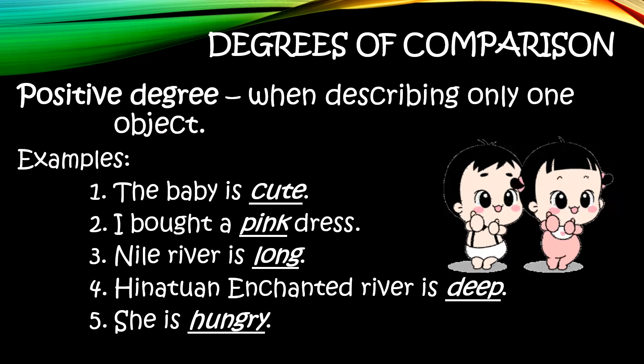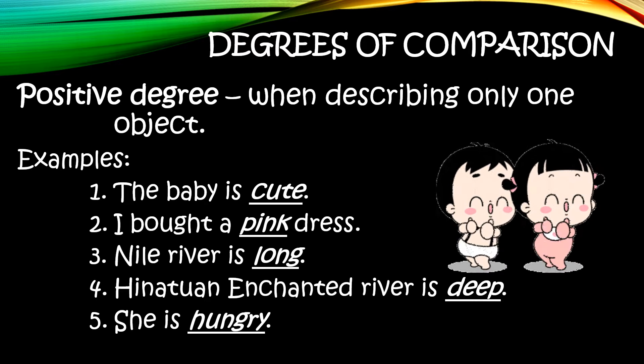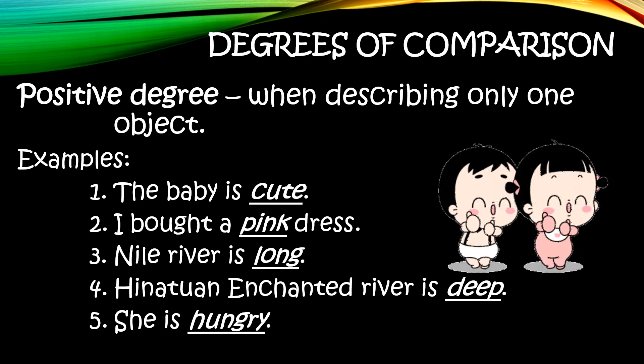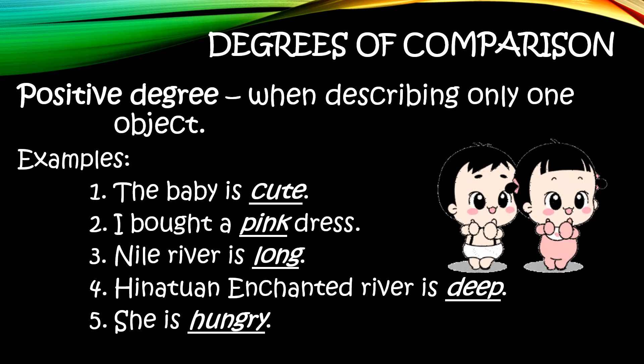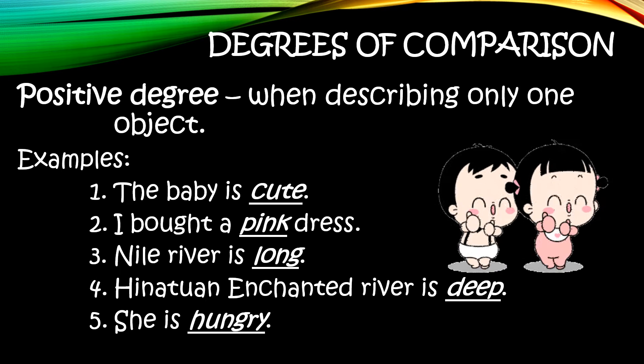There are three degrees of comparing adjectives. The first one is the positive degree. Positive degree is when describing only one object.